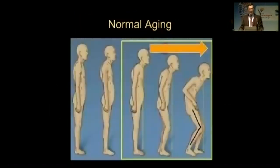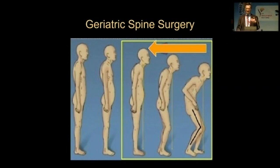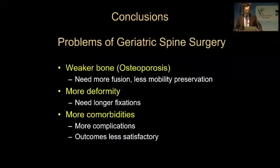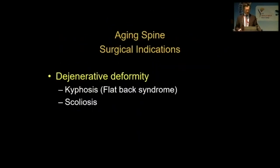Normal aging is becoming kyphotic. Normally all persons lose some height and then become kyphotic, so the recent trend is to correct this. But then we have problems like osteoporosis, more deformity, and more comorbidities — how can we deal with them?